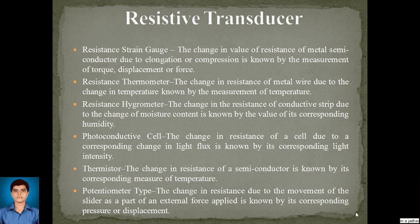Examples of resistive transducers include: resistance strain gauge — the change in resistance of a metal or semiconductor due to elongation or compression is used to measure torque, displacement, or force. Resistance thermometer — the change in resistance of a metal wire due to change in temperature is used for temperature measurement, as dimensional changes in the wire cause a corresponding change in resistance.